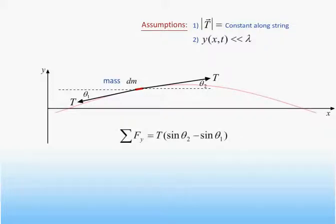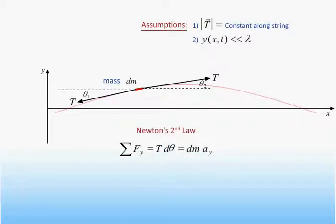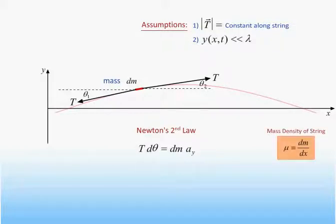The net force in the y direction is the difference in the y components of the tension on either side of the string element. Since the sine of a small angle is very close to the angle itself, this difference will just be the tension times the difference in the angle on either side of the string element. We can now apply Newton's second law to the string element in the y direction. We know the net force, and we will write the mass of the element as the product of the length of the string and mu, its mass density. The resulting expression then relates the product of the tension and the derivative of the angle of the string with respect to x to the product of the mass per unit length and the acceleration. Since we want to end up with an expression for the displacement y as a function of x and time, we want to eliminate the angle theta from this expression.